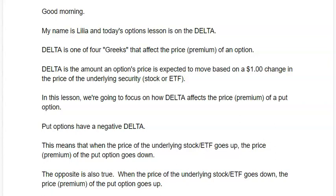In this lesson, we're going to focus on how delta affects the price of a put option. Put options have a negative delta. This means that when the price of the underlying stock goes up, the price of the put option goes down. The opposite is also true — when the price of the underlying stock goes down, the price of the put option goes up.